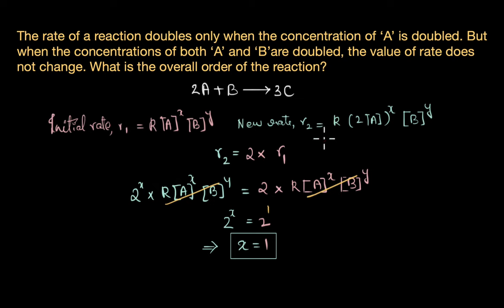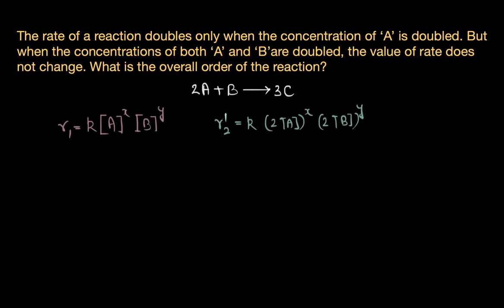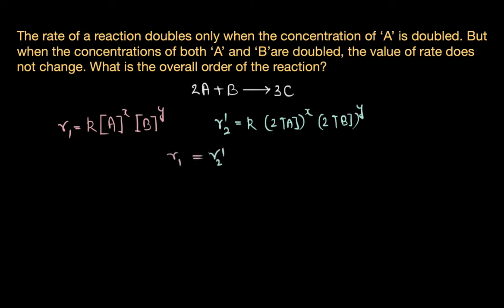Let's use the same strategy to see what happens when the concentrations of both A and B are doubled but the value of rate does not change. Again, let's write the initial rate as R1 is equal to K into A power X times B power Y. R2 dash is the reaction rate when both concentrations of A and B are doubled. Since the value of rate does not change, the new rate is the same as the initial rate — that is R2 dash is equal to R1.